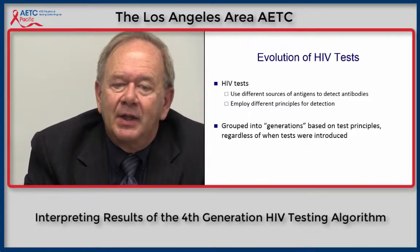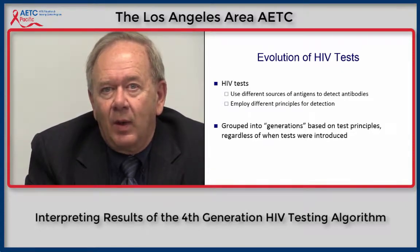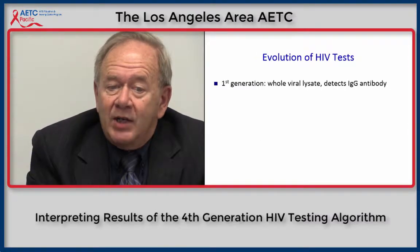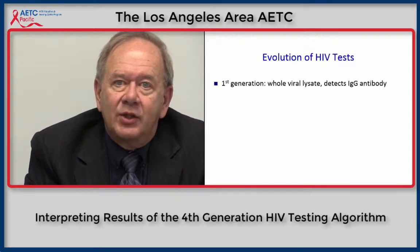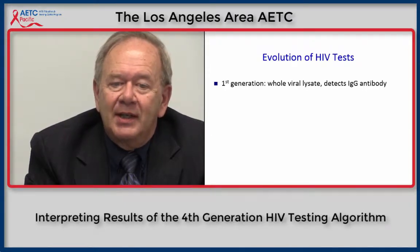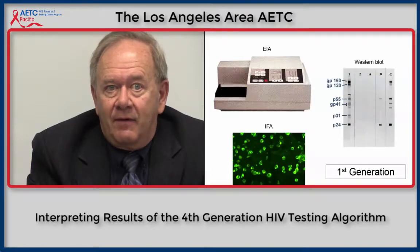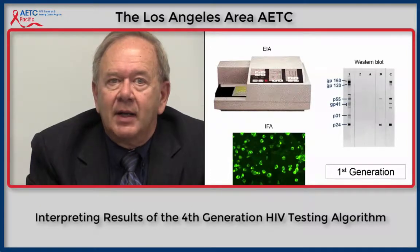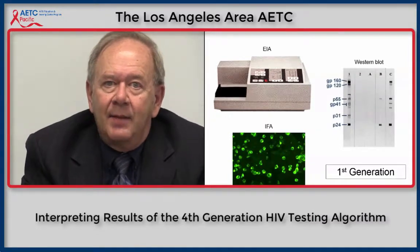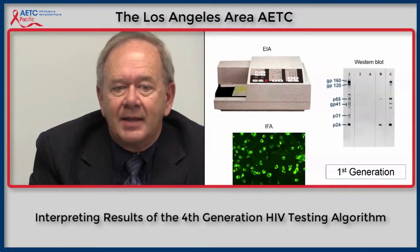They've been grouped into generations which are based on the test principles, regardless of the time when the tests were introduced. The first-generation test used whole viral lysate as its antigen and the technology detected only IgG antibodies. This is the 30th anniversary in 2015 of the introduction of the EIA, but the Western blot and the immunofluorescent assay used for confirmation are also first-generation assays.